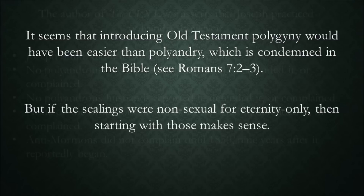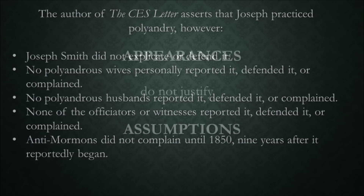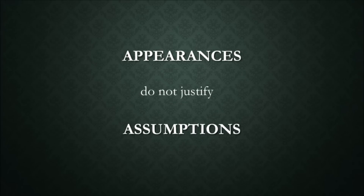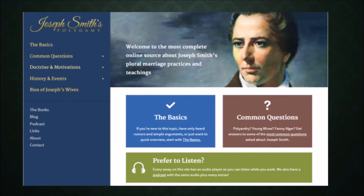The author of the CES Letter asserts that Joseph practiced genuine polyandry. However, Joseph Smith did not explicate or defend it. No polyandrous wives personally reported it, defended it, or complained. No polyandrous husbands reported it, defended it, or complained. None of the officiators or witnesses reported it, defended it, or complained. Anti-Mormons did not complain until 1850, nine years after it reportedly began. The appearance of two marriage ceremonies is not evidence of polyandry, and it does not justify the assumption that thereafter the woman had two husbands. For more information regarding Joseph Smith and plural marriage, visit josephsmithspolygamy.org.